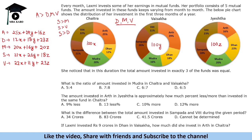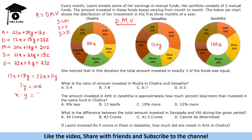Equating Dhan and Width: (12x + 18y + 23z) = (22x + 11y + 23z). The 23z terms cancel, giving 18y − 11y = 22x − 12x, so 7y = 10x, which means x : y = 7 : 10.